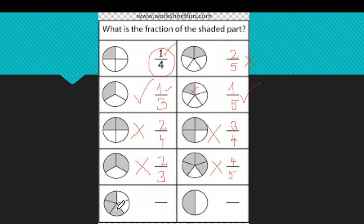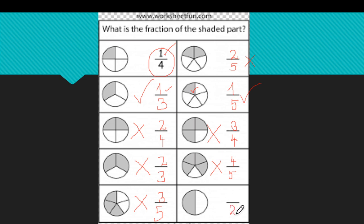Let's count here. One, two, three, four, five — five equal parts. How many of them are shaded? One, two, three — three of them are shaded. Is this a unit fraction? No, it is not, because three parts are shaded, not one. What about this one? We have two equal parts, and only one is shaded. Is this a unit fraction? Yes, it is, because only one part is shaded.